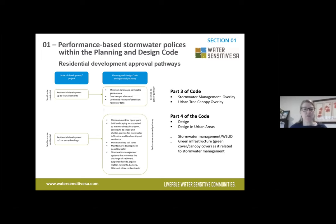For five or more allotments, you go to Part 4 of the code — the design and urban area section — which deals with stormwater management, water-sensitive urban design, and green infrastructure canopy establishment. There are minimum outdoor open space and soft landscaping requirements to encourage stormwater infiltration, biodiversity, and improved aesthetics. There are also minimum deep soil zone requirements, maintenance of pre-development stormwater runoff peak flows, and management of stormwater systems to minimise discharge of sediment, suspended sediments, organic matter, nutrients, bacteria, and litter to our waterways.